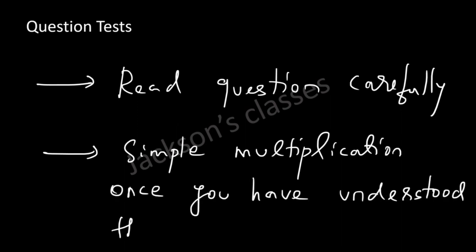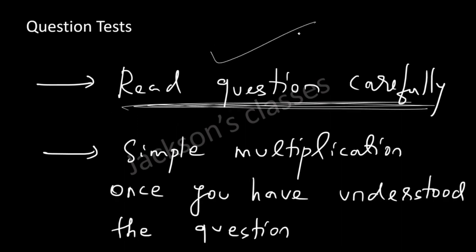Now let's look at what is being tested in this question. Over here, you have to have the ability to read the question carefully and understand what is asked. Remember over here, we had to find miles per hour. If you mark the option as C, then it's because you've not read the question accurately. And then it's based on simple multiplication once you've understood the question.